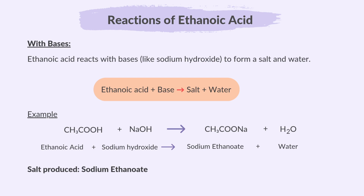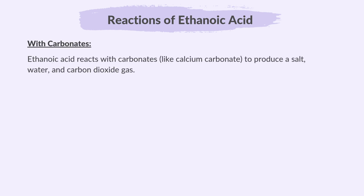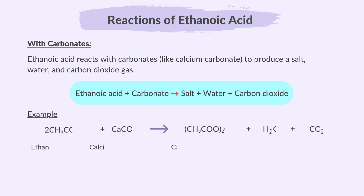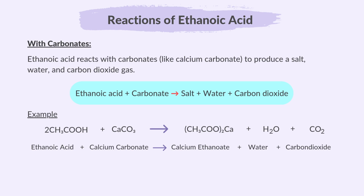Ethanoic acid reacts with carbonates, such as calcium carbonate, to produce a salt, water, and carbon dioxide. This is the general reaction. For example, ethanoic acid reacts with calcium carbonate to give calcium ethanoate, water, and carbon dioxide. So the salt produced is called calcium ethanoate.